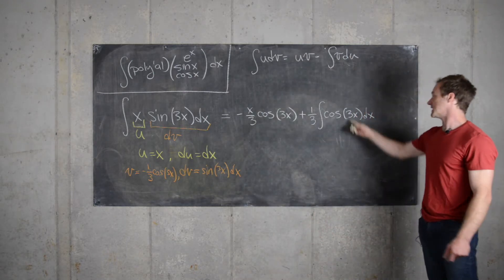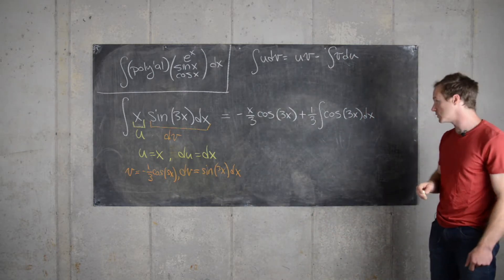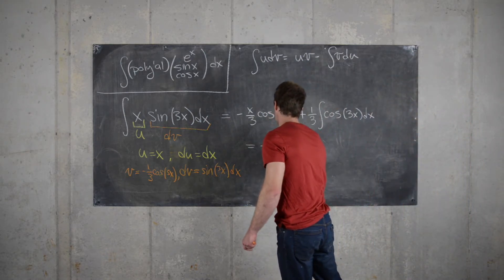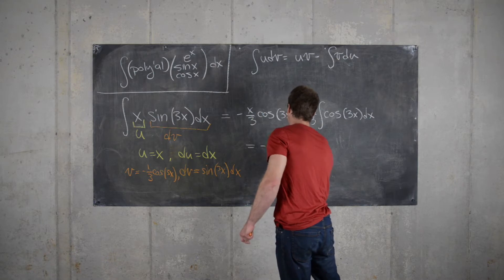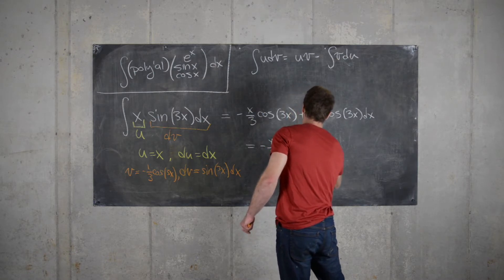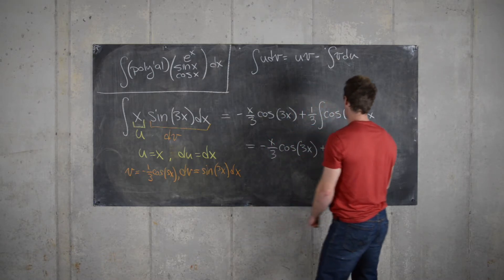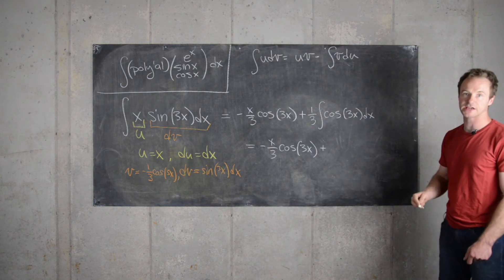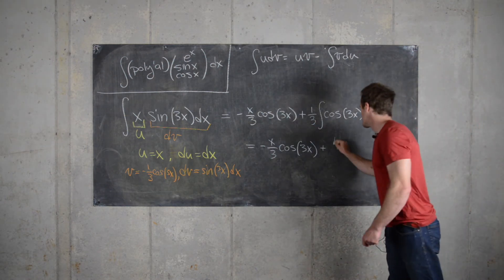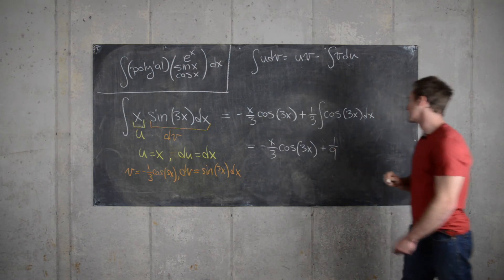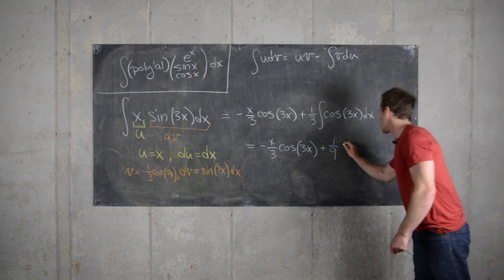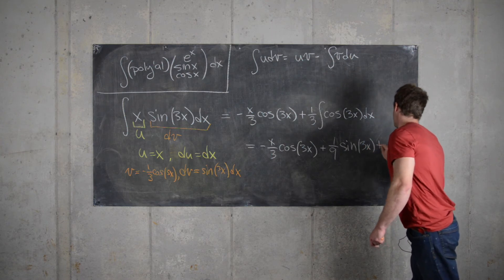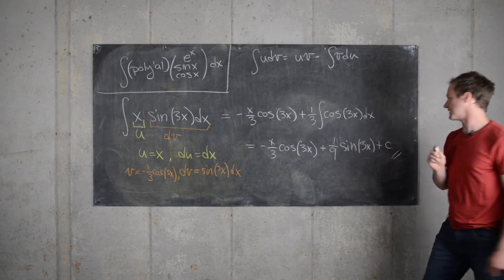And now it's pretty nice because we know the antiderivative of cosine 3x. And so we're one step from the end. We have minus x over 3 cosine 3x plus we get another 3 in the denominator from taking the antiderivative of cosine 3x. So that'll give us 1 ninth. And then the antiderivative of cosine is sine. So we get sine 3x and then plus our constant of integration. And that's the final answer.